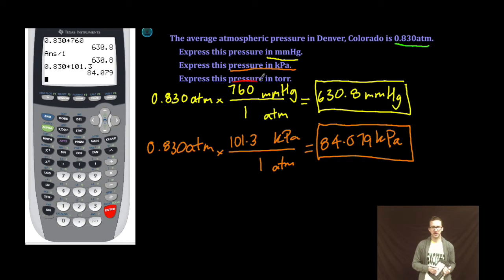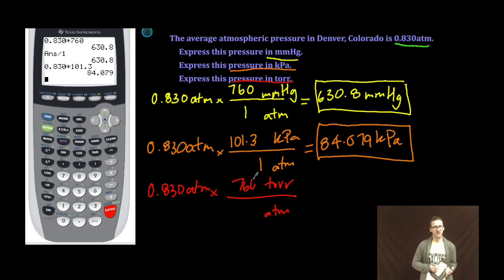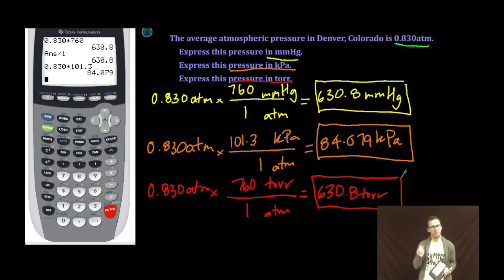And then finally, we're asked to convert to a pressure in torr. Once again, 0.830 atmospheres. Atmospheres in the denominator to cancel out. Torr on top. 760 torr in one atmosphere. I don't even need a calculator for this. Millimeters mercury and torr have the same value. So I'm going to get, once again, 630.8 torr as my converted pressure. Boom.